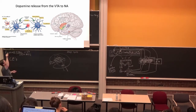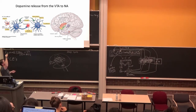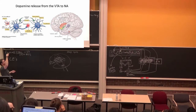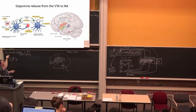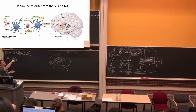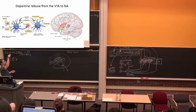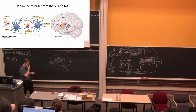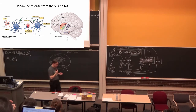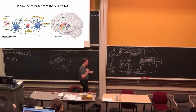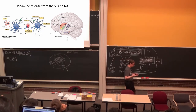Many drugs of abuse enhance, either directly or indirectly, the amount of dopamine coming from the ventral tegmental area to the nucleus accumbens — the same thing as the ventral striatum. Some inhibit a GABA neuron in the ventral tegmental area, decreasing inhibition and thereby causing more dopamine release. The ventral striatum is our reward-pleasure pathway.